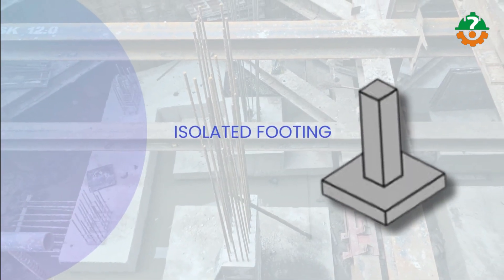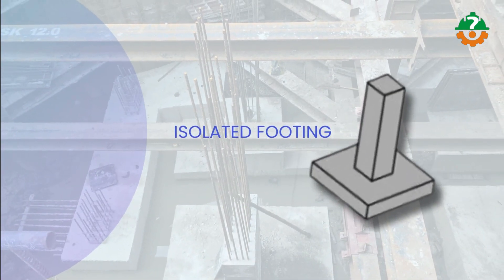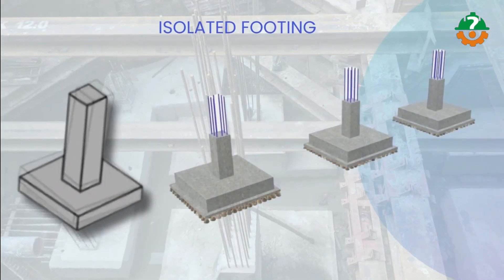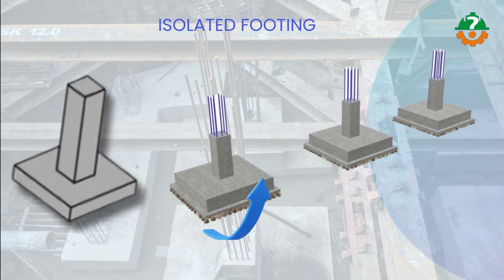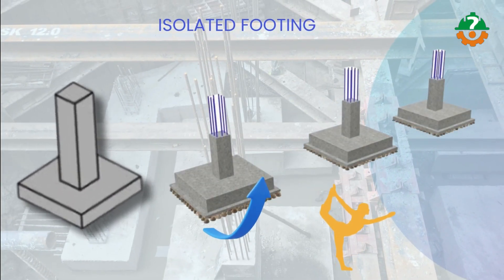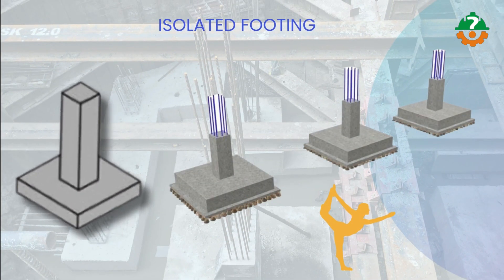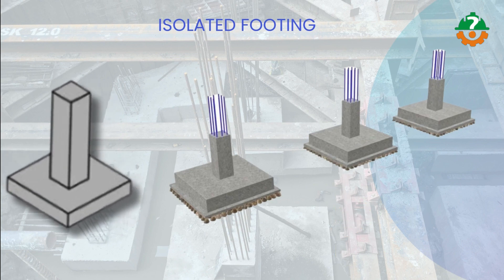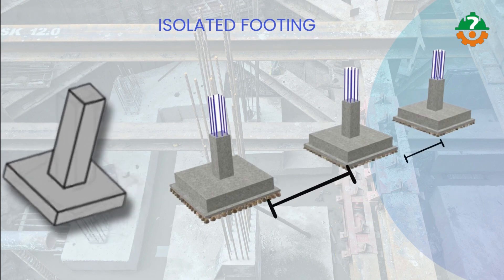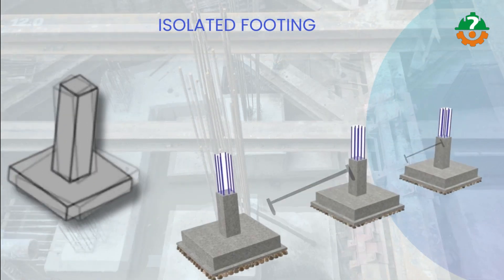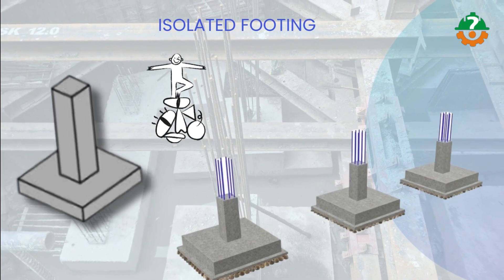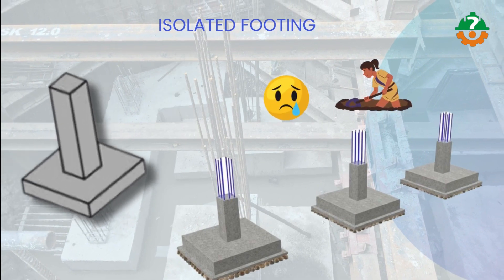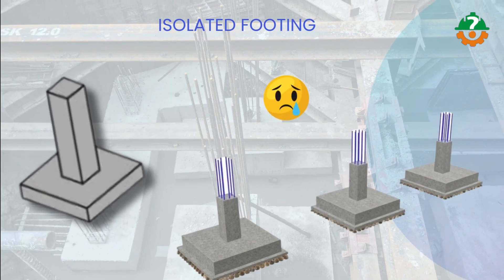Moving on to the isolated footing. These individual pads support single columns, offering flexibility in design and construction, particularly when columns are spaced at varying distances. Pros include adaptability, but they might require more excavation and materials.